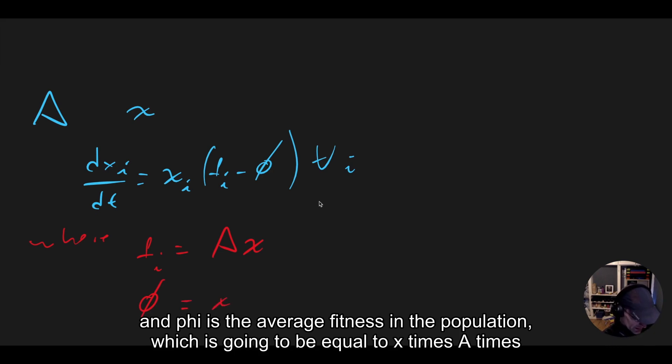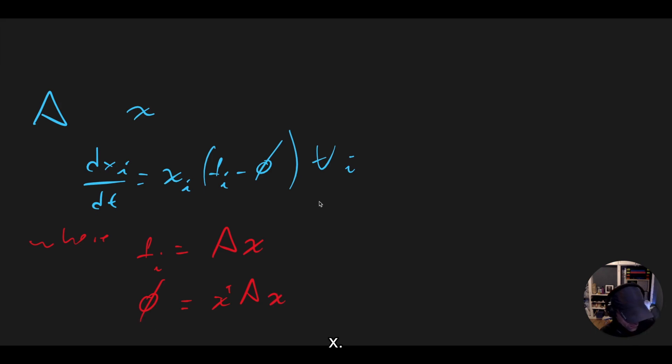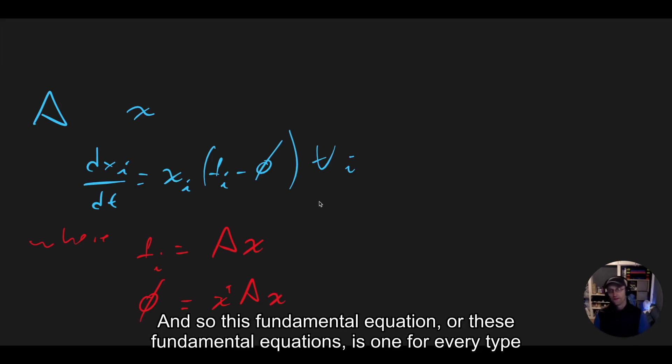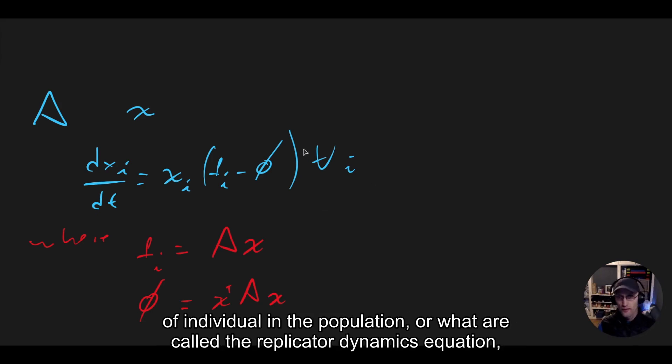Which is going to be equal to x times A times x. And so this fundamental equation or these fundamental equations is one for every type of individual in the population, what are called the replicator dynamics equation.